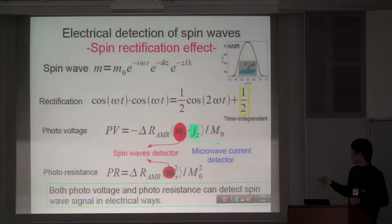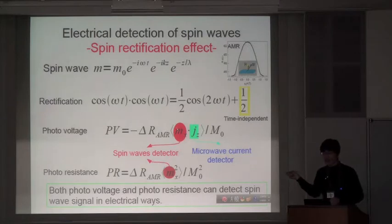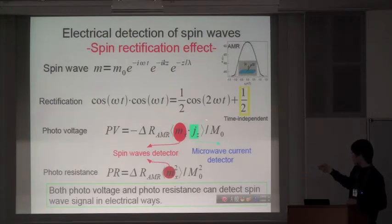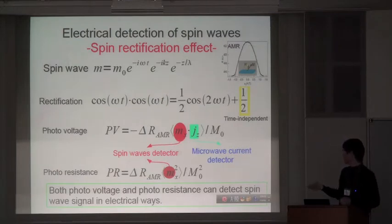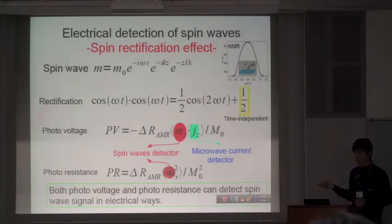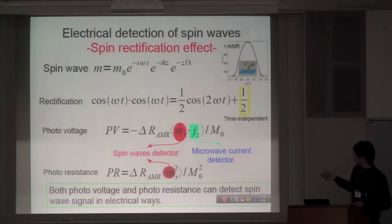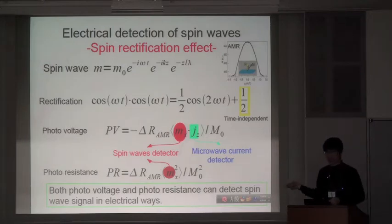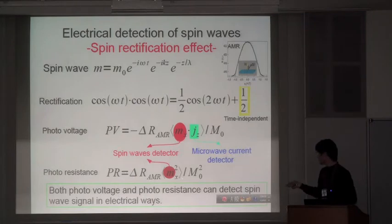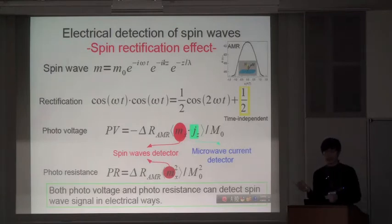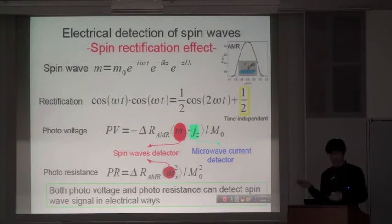This is what we call rectification. So, in a ferromagnetic material, we have a resistance change due to the spin wave, which coupling with the microwave current, this is induced by the microwave E field. And we get here the resistance, here is the current, both of them have the same frequency. By time average, we get time-independent voltage. And also, according to considering the second harmonic effect, the periodic resistance can, by time average, we get a resistance. Both of them, voltage and resistance are related to the spin wave, so we can use them to detect the spin wave. This is how we can detect the spin wave in an electrical way.